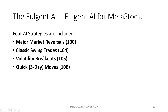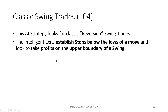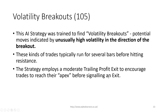The AI identifies four major strategies. The major market reversal (code 100) looks for oversold conditions and cross-market indicators to find a strong move. Code 104 is classic swing trades — revision to the mean, quick moves you can capitalize on. Code 105 is the volatility breakout, where the AI finds unusually high volatility in the direction of the breakout — these are high-volatility, somewhat quick trades where you add a trailing stop-loss.